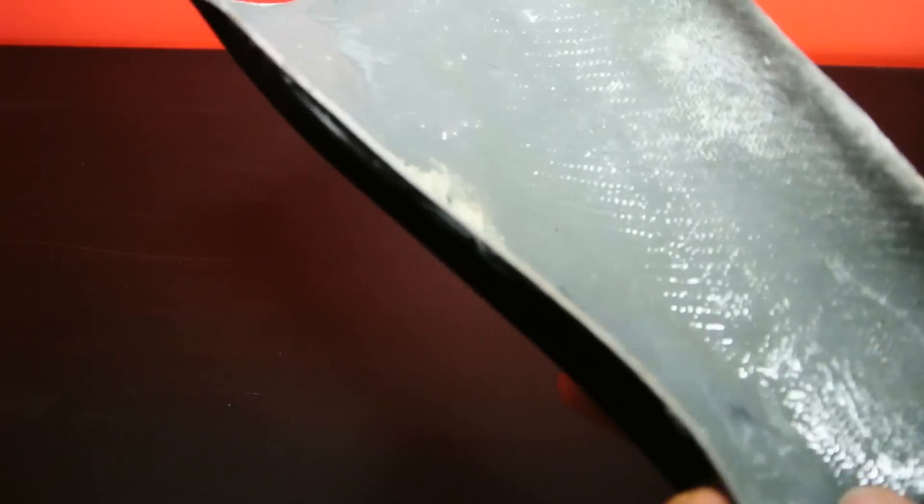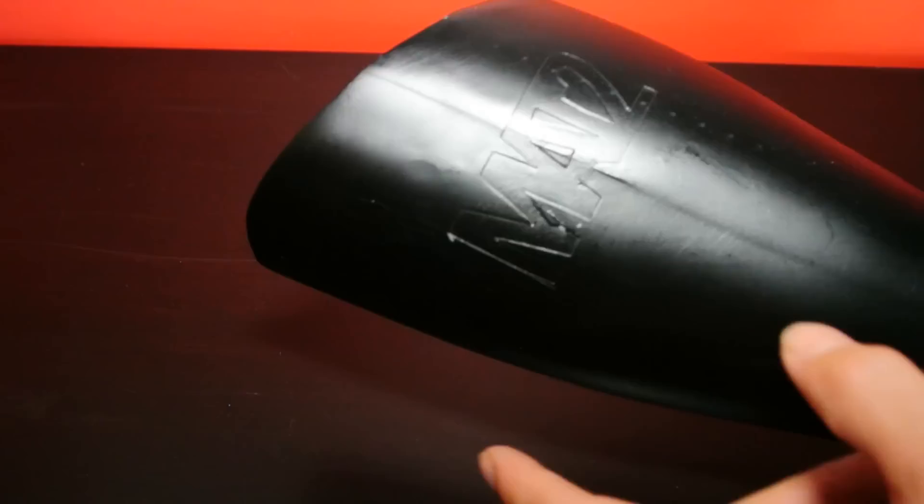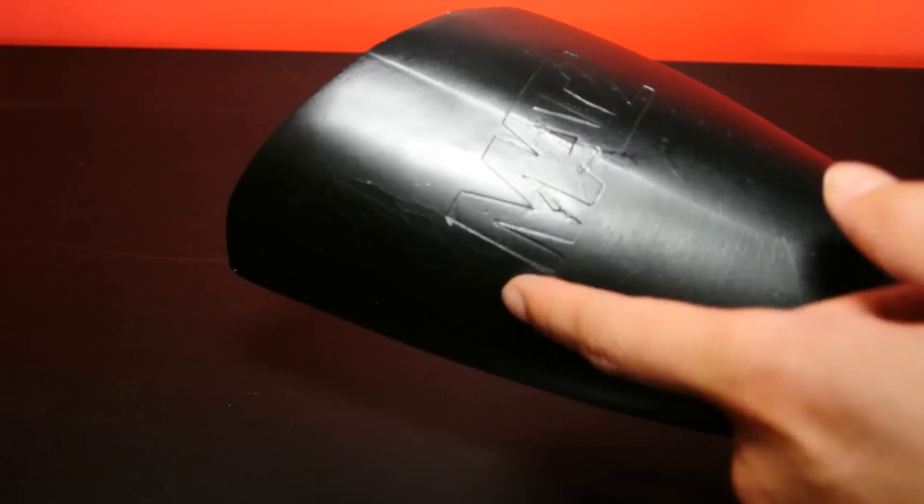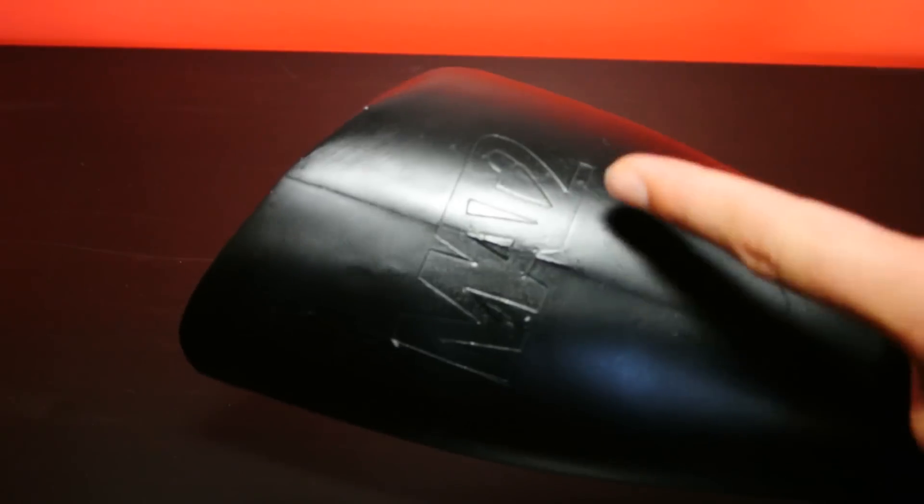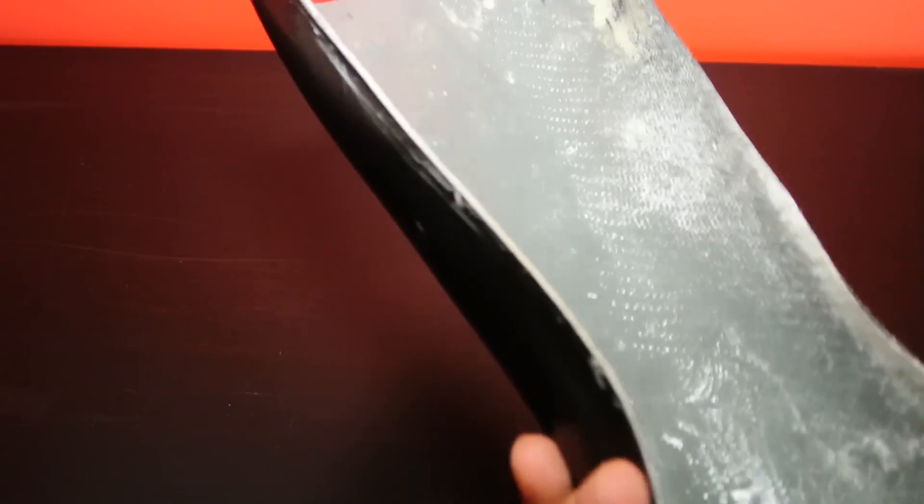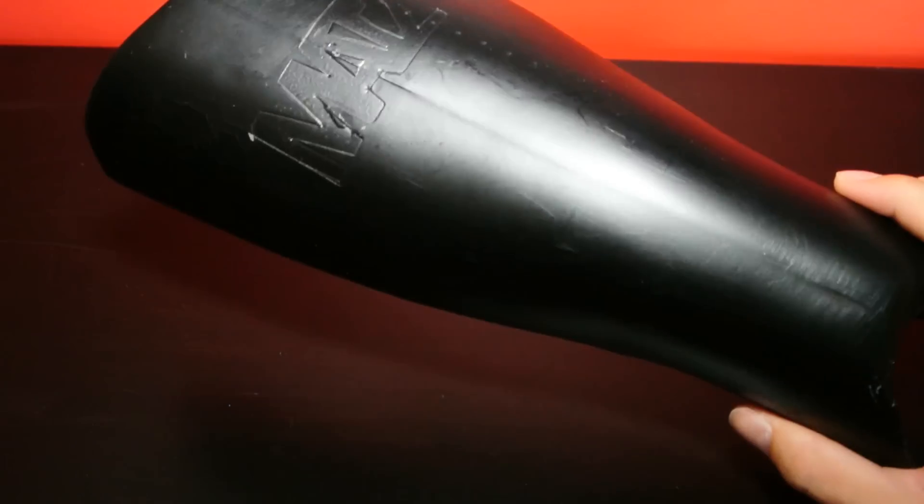Then I started making some molds and these were the first coming out. This is vacuum bagged fiberglass with a gelcoat on top. These were the first prototypes where I used lettering inside the molds, just to test out the possibilities with those techniques.